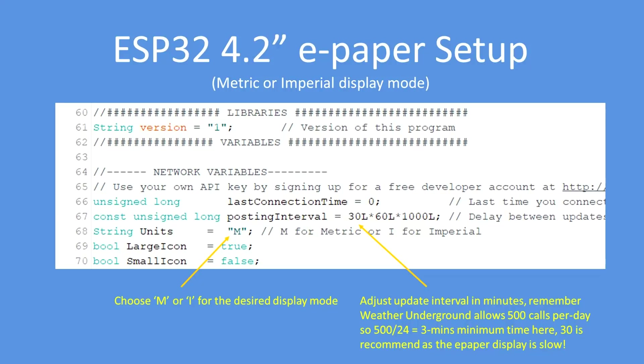In the main body of the program there is a setting for the update time, currently set to 30 minutes in the source code. There is also a setting for units — either metric or imperial. The source code only accepts two values: M or I.